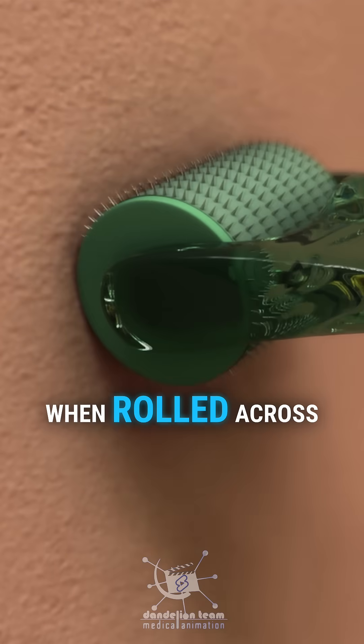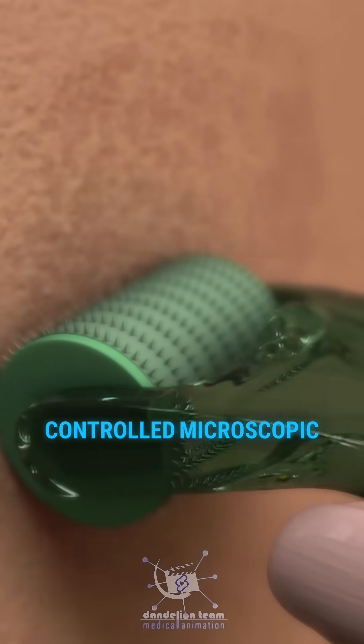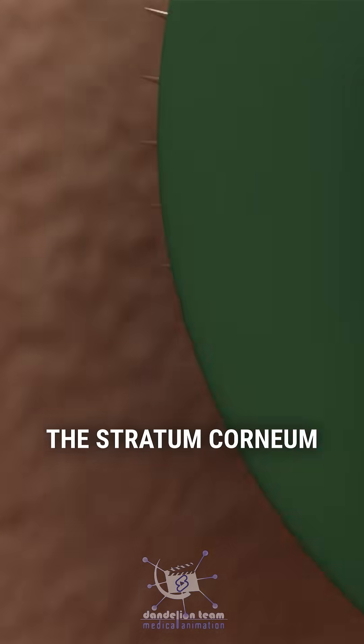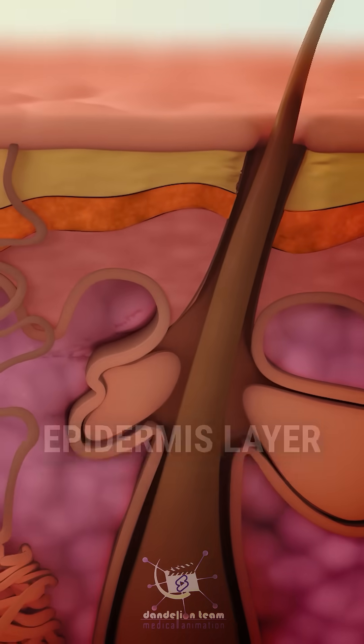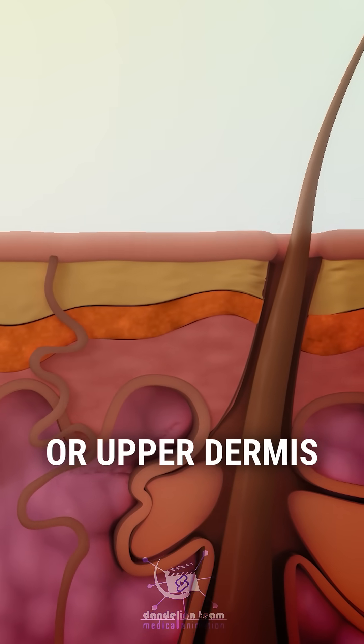When rolled across the skin, these needles create numerous controlled microscopic punctures in the stratum corneum, or the outermost epidermis layer, and the papillary, or upper dermis.